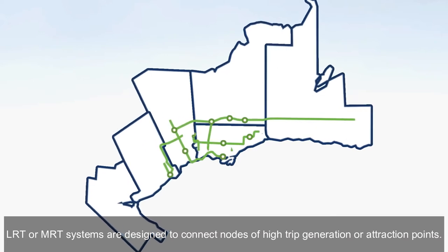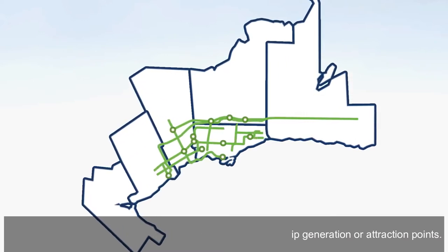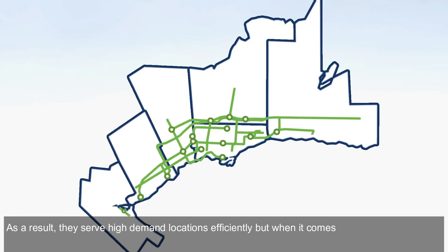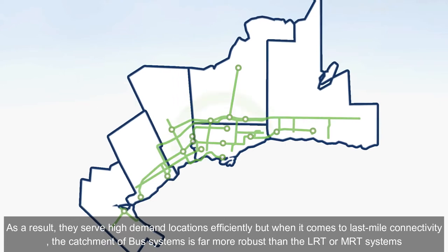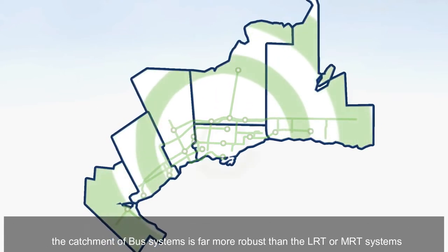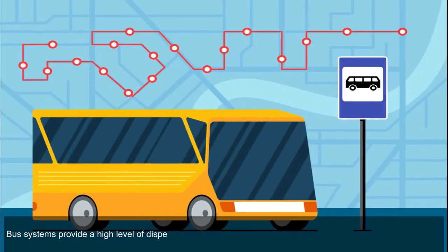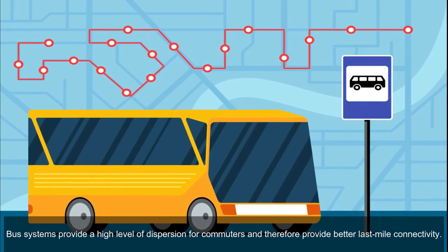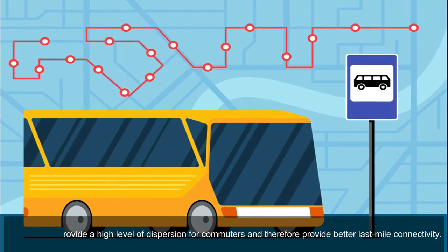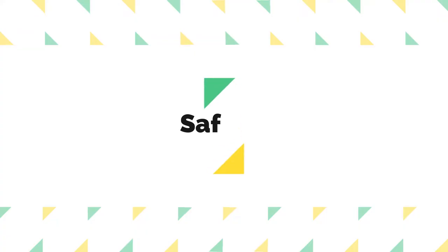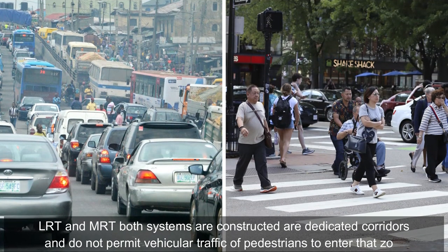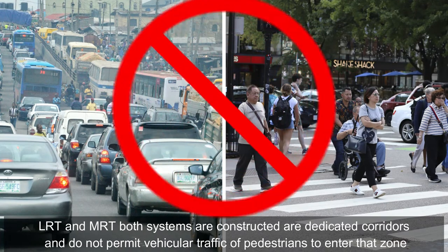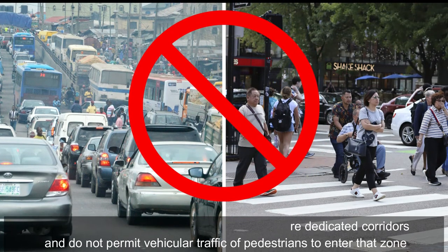Regarding last mile connectivity, LRT and MRT systems are designed to connect nodes of high trip generation or attraction points and serve high-demand locations efficiently. However, when it comes to last mile connectivity, the catchment of bus systems is far more robust than LRT or MRT. Bus systems provide a high level of dispersion for commuters and therefore offer better last mile connectivity.